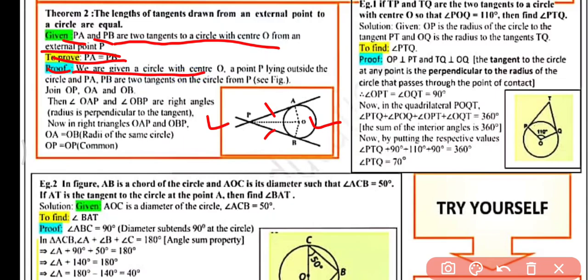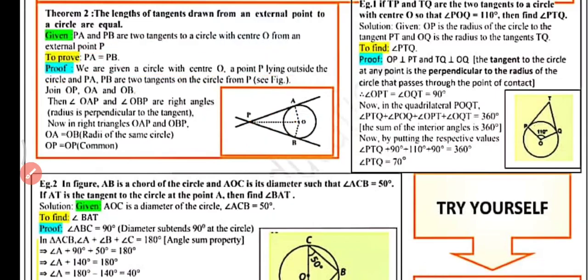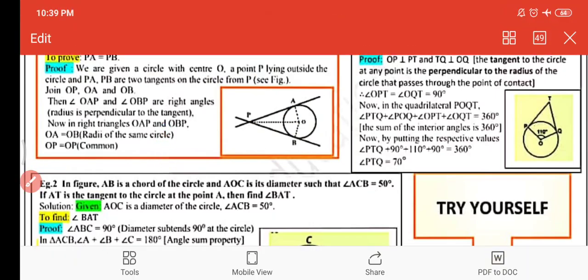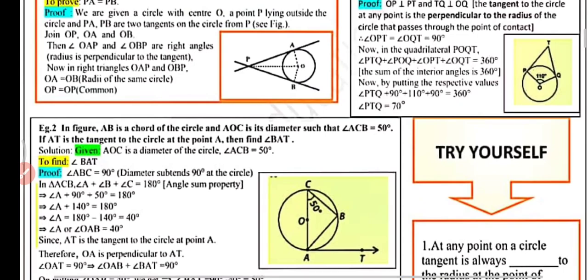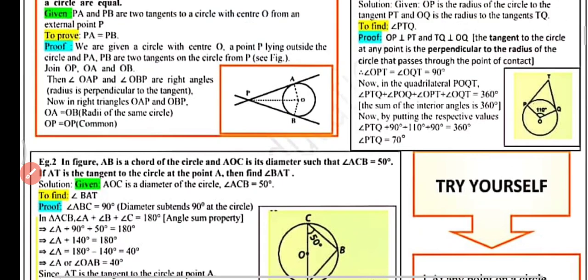In the proof, join OP, OA, and OB. In triangles OAP and OBP: angle OAP = angle OBP = 90° (radius perpendicular to tangent), OP is common, and OA = OB (radii). By the RHS congruence rule, triangle OAP ≅ triangle OBP. Therefore, by CPCT, AP = PB — the two tangents are of equal measure.